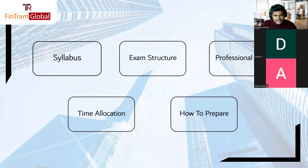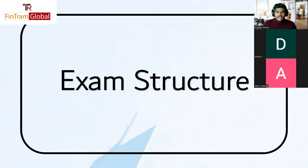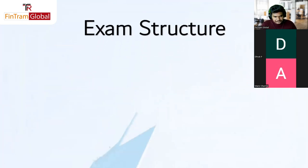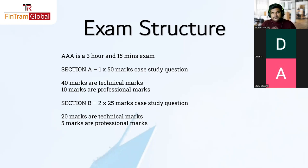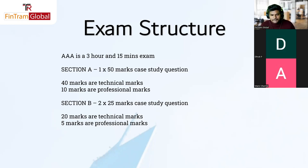Moving on to exam structure — the Triple A exam is three hours and 15 minutes. Taking a conservative approach, I would treat it as a three-hour exam, with 15 minutes as buffer time. There are two sections: Section A has a 50-mark case study question, and Section B has two 25-mark questions.